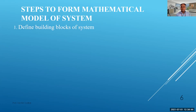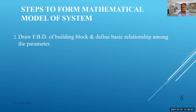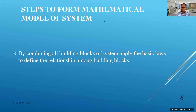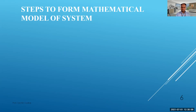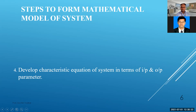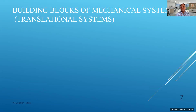The first step is to define the building blocks of the system. The second step is to draw a free body diagram of each building block and define the basic relationships among the parameters. Third, by combining all the building blocks of the system, apply the basic laws and define the relationships among them. The fourth step is to develop the characteristic equation of the system in terms of input and output parameters, which is called the mathematical model of the system.